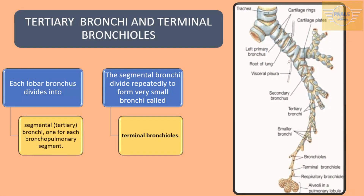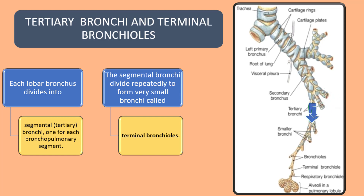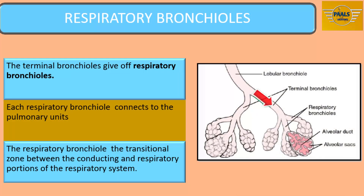Each lobar bronchus divides into segmental or tertiary bronchi, one for each bronchopulmonary segment. The segmental bronchi then divide repeatedly to form very small bronchi called terminal bronchioles. The terminal bronchioles give off respiratory bronchioles. The respiratory bronchioles lack cartilage in their walls, and each aerates a small portion of the lung called a pulmonary unit. The respiratory bronchioles represent the transitional zone between the conducting and respiratory portions of the respiratory system.